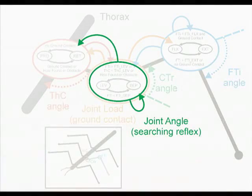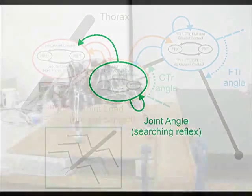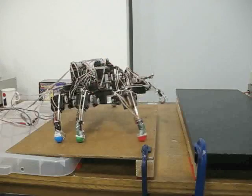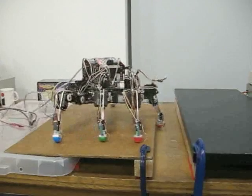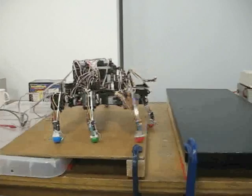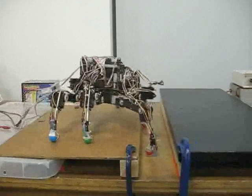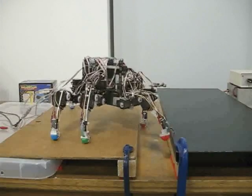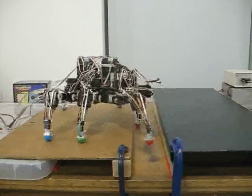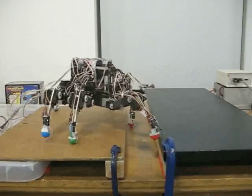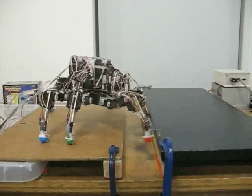Similarly, the addition of a joint angle sensing signal can warn the robot of holes. This new sensory path allows the robot to use a searching reflex to step beyond holes or gaps and find solid terrain on the other side.